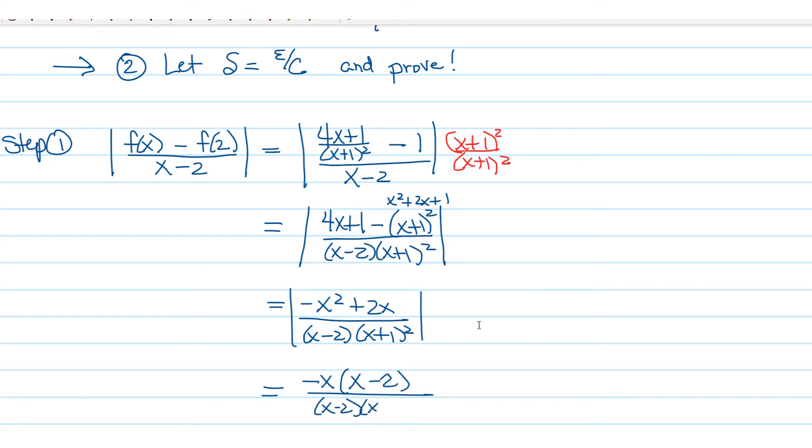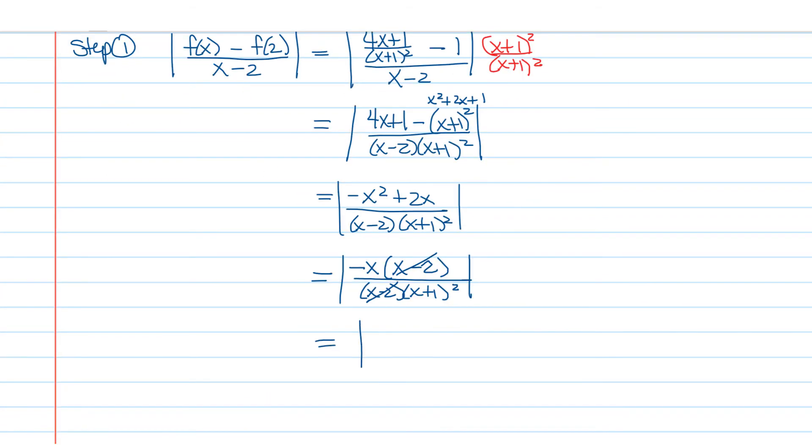Notice that the numerator factors, so we have |-x(x-2)|/|(x-2)(x+1)²|. We can reduce there, getting the absolute value of -x/(x+1)², although we're taking an absolute value so we don't really need that negative, we could just say |x/(x+1)²|.